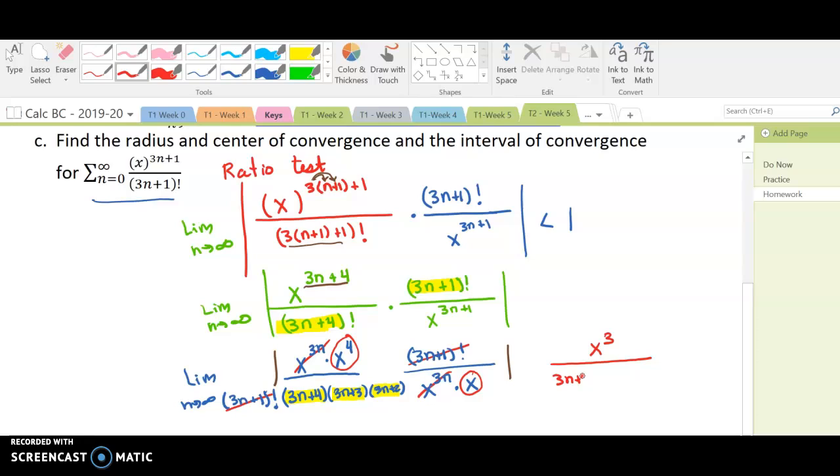and 3n plus 4 times 3n plus 3 times 3n plus 2 in the denominator. And we're looking for that limit as n approaches infinity, and we're looking for that to be less than 1.